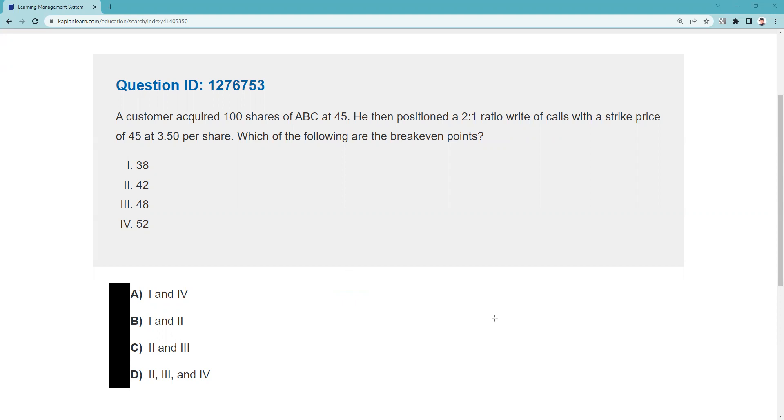All right, let's look at this question. A customer acquired 100 shares of ABC at 45. He then positioned a 2-to-1 ratio write, so that means I'm writing two calls on 100 shares. The main test question on Series 4 and Series 9 is not the break-evens, it's that you recognize that this exposes the customer to unlimited risk. There's no such thing as partially naked, so on that second call that's not covered, I got a potential problem.